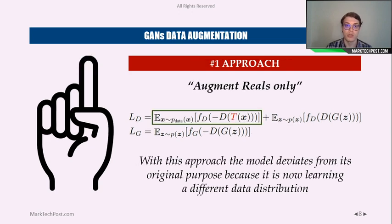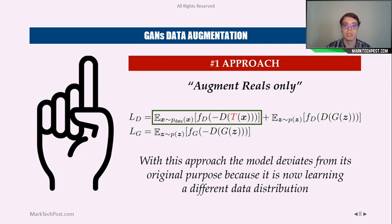A first approach for data augmentation in GANs could be to augment the reals only — just the real data. Here, the augmentation function is indicated by the letter T. With this approach, the model deviates from its original purpose, because now we are training the model with a different data distribution — the data distribution given by the data augmentation of the reals. So this approach fails.